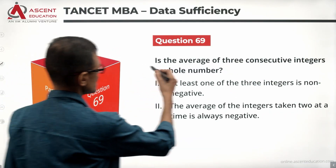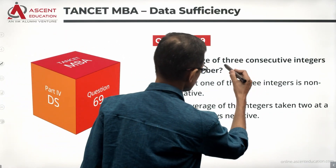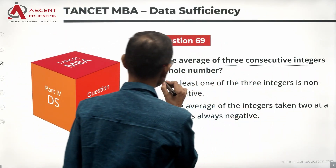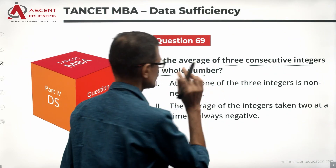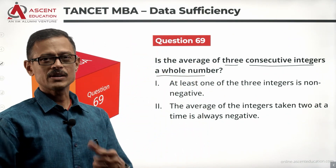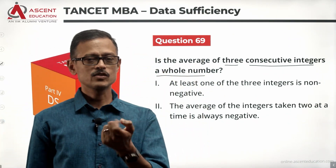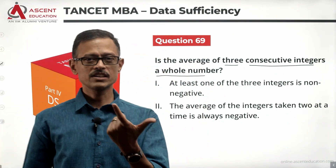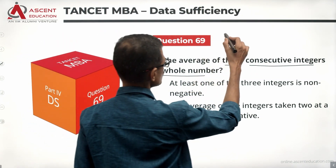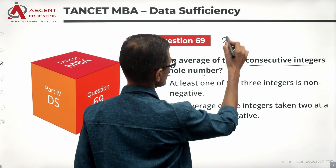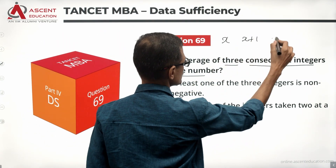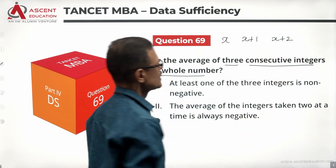Take a look at the question: is the average of three consecutive integers a whole number? For consecutive integers, if we take one of the integers to be x, the next one will be x plus 1, and the third one will be x plus 2.